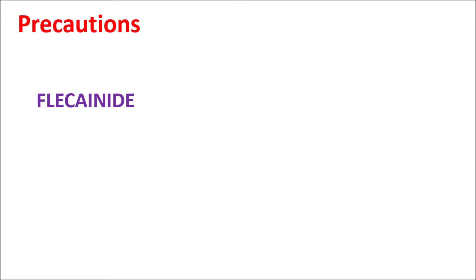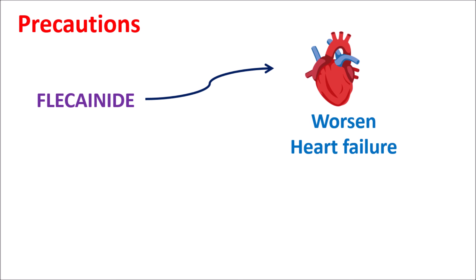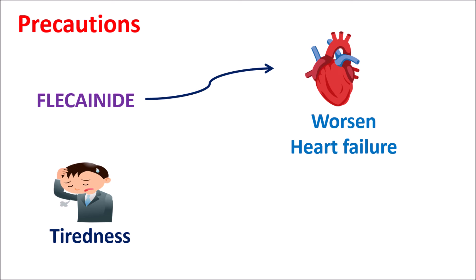Another important consideration is that Flecainide can worsen heart failure because it blocks the sodium channels, thereby reducing depolarization of the cardiac membrane. So Flecainide should be carefully used in people with any previous history of heart failure, and symptoms like excessive tiredness, weakness, wheezing, coughing, and shortness of breath may indicate worsening of heart failure. In such people, Flecainide should be carefully used.